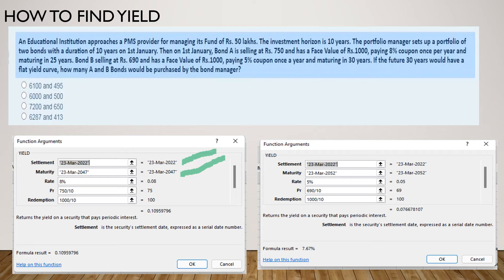As you can see I have put 2022 and 2047 here which means that I have taken care of 25 years. Then you have to put the rate which is coupon rate. While putting price and redemption do not forget to divide it by 10 because Excel formulas for yield are based on a face value of 100 rupees.